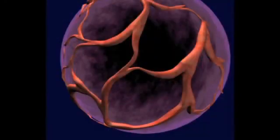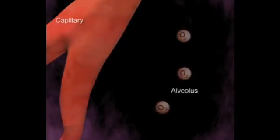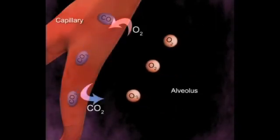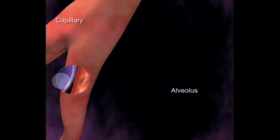Surrounding each alveolus is a network of capillaries arranged so that air within the alveoli is separated from the blood in the capillaries by the thin respiratory membrane.